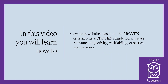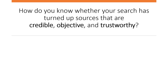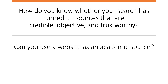In this video, you will learn how to evaluate websites based on the proven criteria, where PROVEN stands for purpose, relevance, objectivity, verifiability, expertise, and newness. If you are searching the web rather than UNB Libraries databases, how do you know whether your search has turned up sources that are credible, objective, and trustworthy? How do you know whether you can use a website as an academic source?